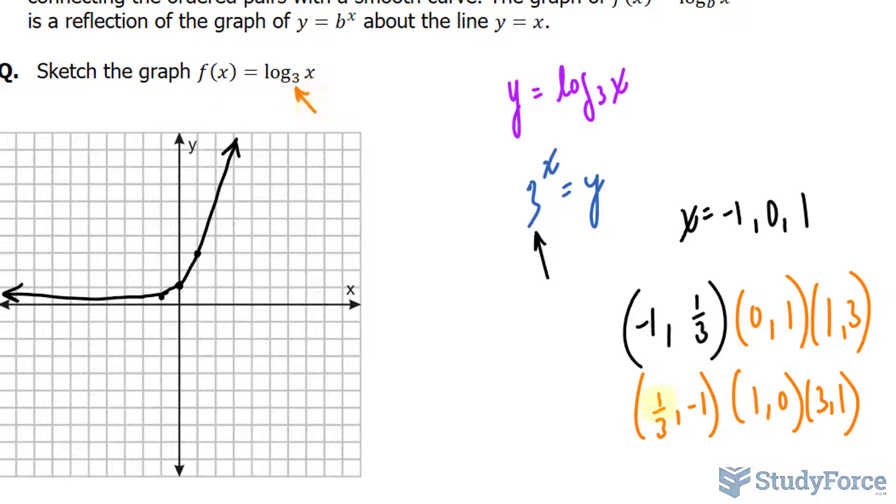Let's go ahead and plot them. We have (1/3, -1) is, let's say, right here. (1, 0) is here, and (3, 1) is right there.